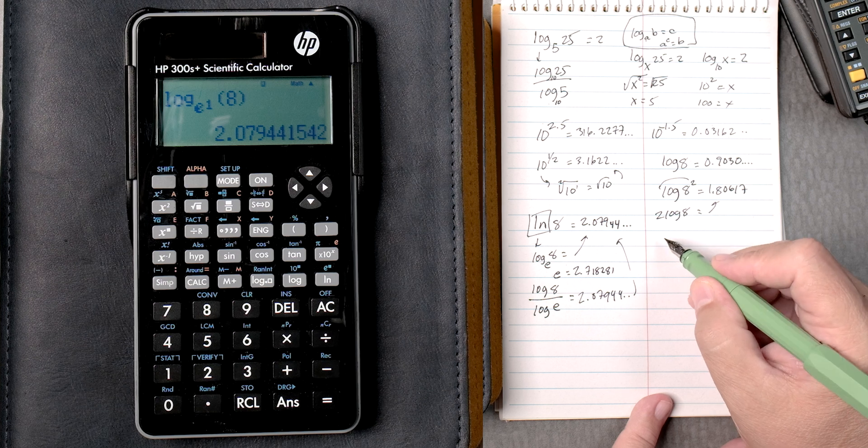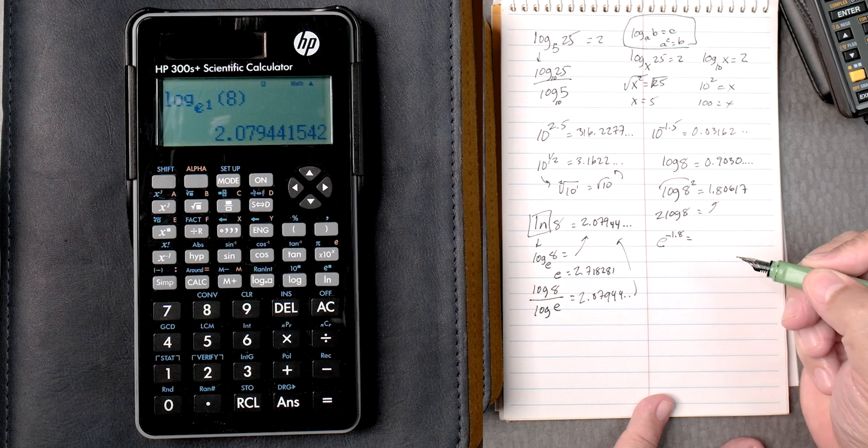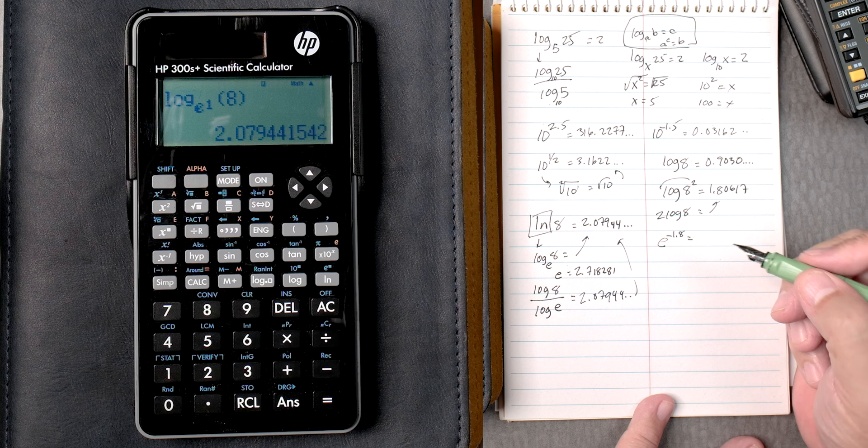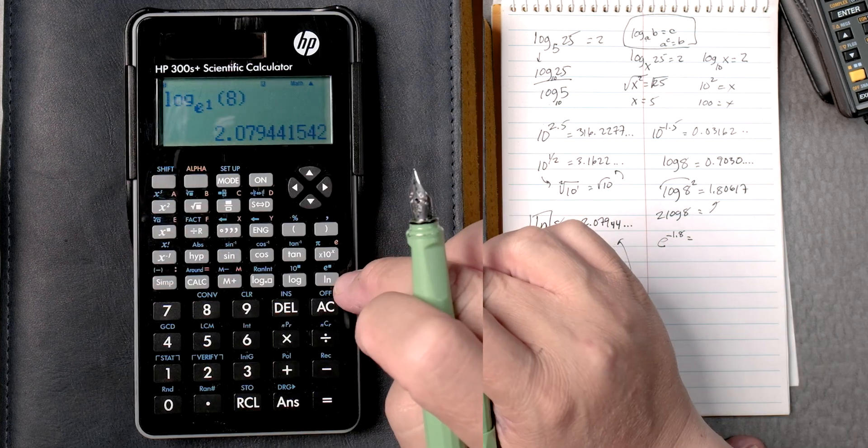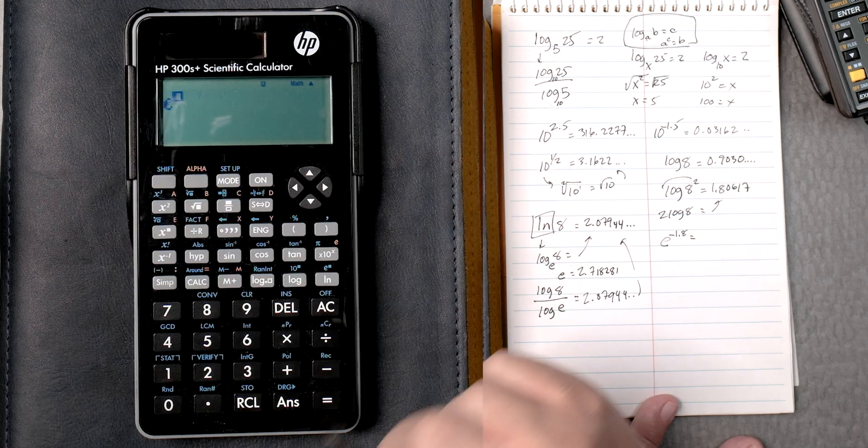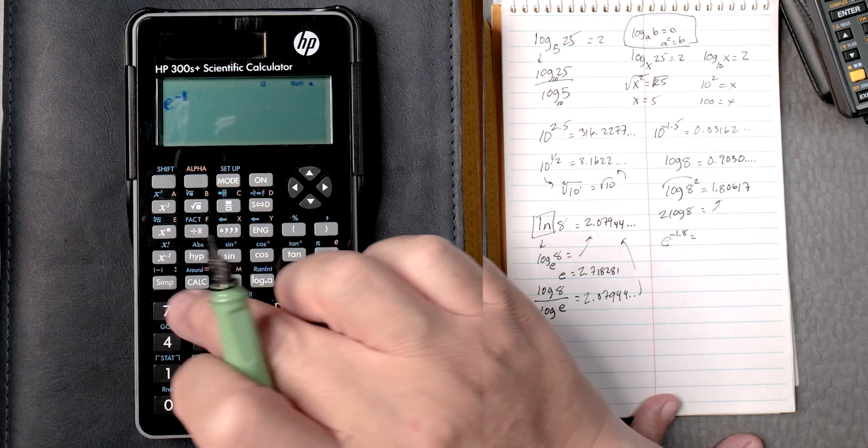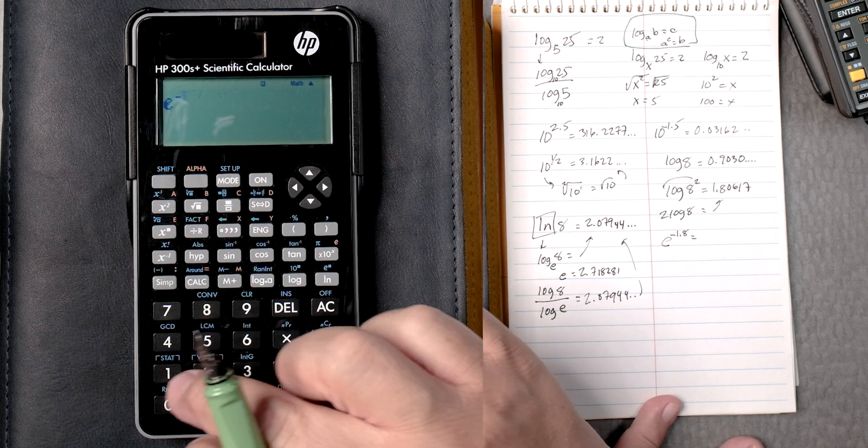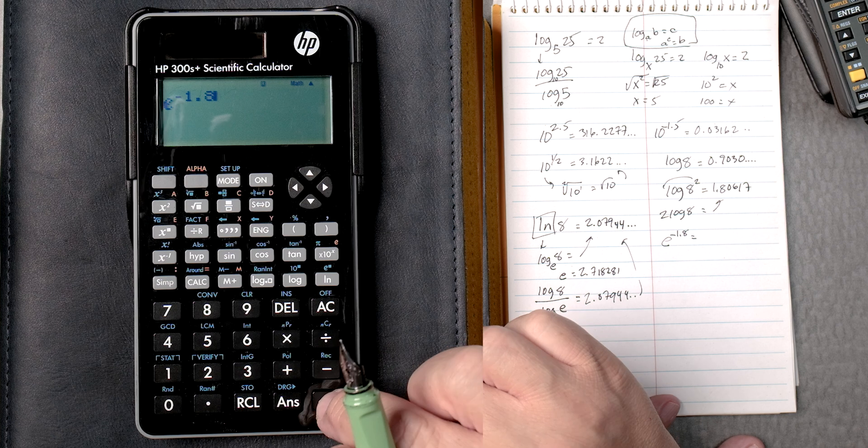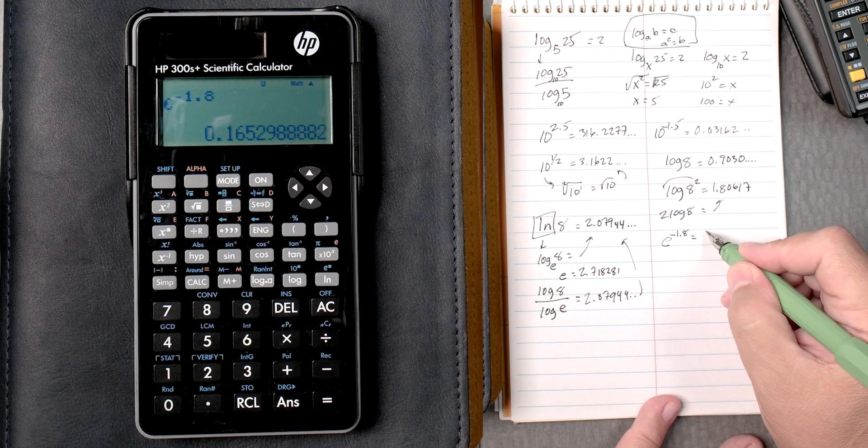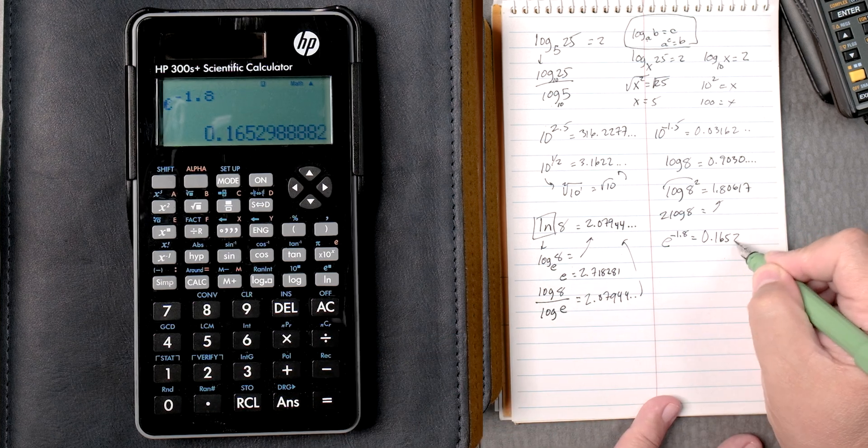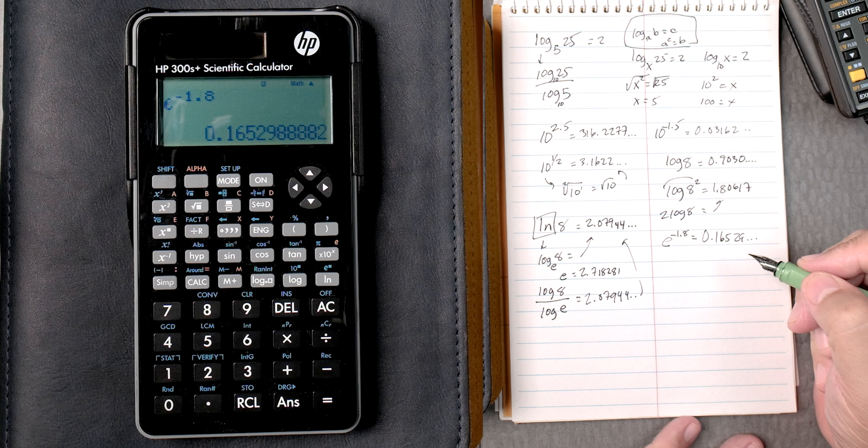Let's do something like e to the minus 1.8. So that's shift, natural log, and then we put the negative, which is shift, 1.8 equals, gives you 0.16529, which is right.